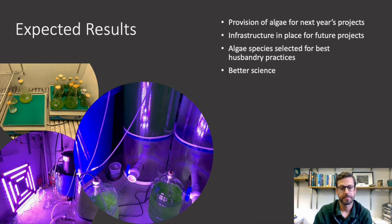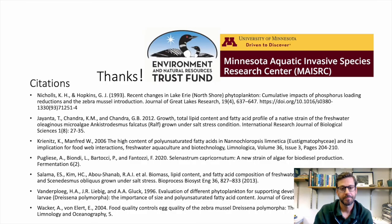By the end of this project, we aim to have supported research on population control and breeding experiments by feeding experimental zebra mussels, to have better understanding of which algae species are most beneficial to zebra mussels by comparing growth rates across several treatments of algae types and combinations, and to have protocols and equipment in place to support future zebra mussel research that better represents the algae availability in local lakes — strengthening experimental accuracy of control methods. Many thanks to the ENRTF and MAISRC for supporting this research.